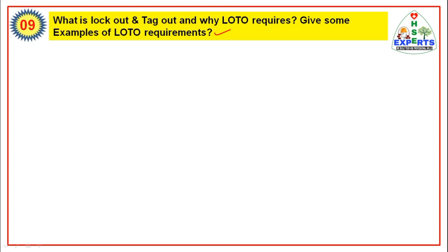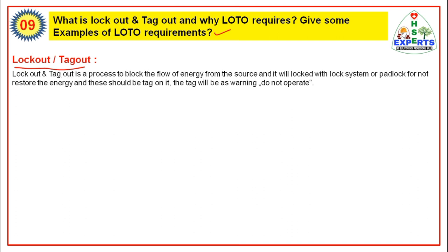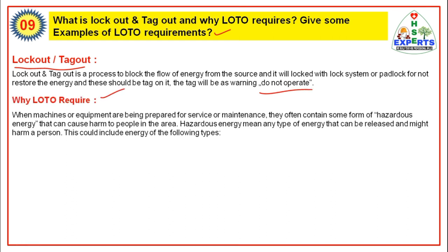Question 9: What is lockout and tagout, and why is LOTO required? Give some examples of LOTO requirements. This is also a very important question in the oil and gas industry and will be asked during shutdown interviews. Lockout and tagout is a process to block the flow of energy from a source. It will be locked with a lock system or padlock to prevent restoring the energy, and this should be tagged with a warning: 'Do not operate.' LOTO is required when machines or equipment are being prepared for service or maintenance, as they often contain hazardous energy that can cause harm to people in the area.